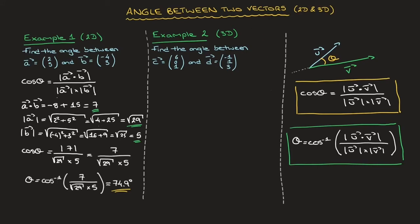Let's look at the next example. We need to find the angle between c with components 6, 0, 1 and d with components negative 1, 1, 3. Using the formula, we can state that the cosine of the angle theta between c and d is equal to the absolute value of c dot d over the product of the magnitude of c and the magnitude of d. We need to calculate the dot product and each of the two magnitudes.